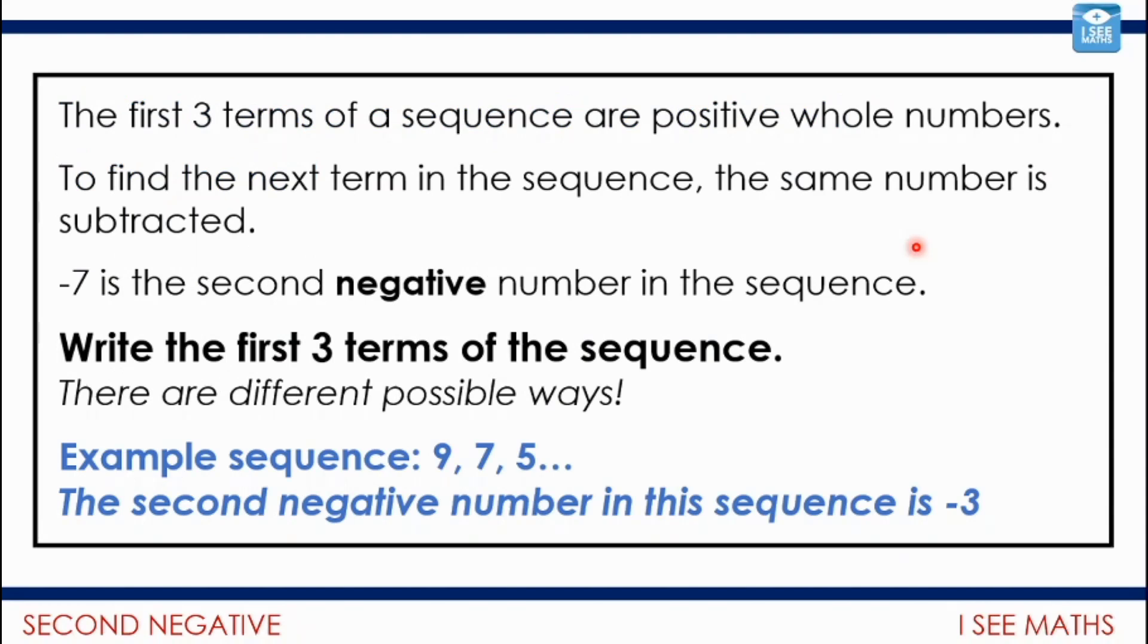Here's the task. The first three terms of a sequence are positive whole numbers. To find the next term in the sequence, the same number is subtracted, just like the examples we've seen. Minus seven is the second negative number in the sequence. Write the first three terms of the sequence. Now, there are different possible ways. I've been using whole numbers in my sequences. So I'm going to show some possible answers in a moment. But here's your big task. Pause the video and get stuck in.